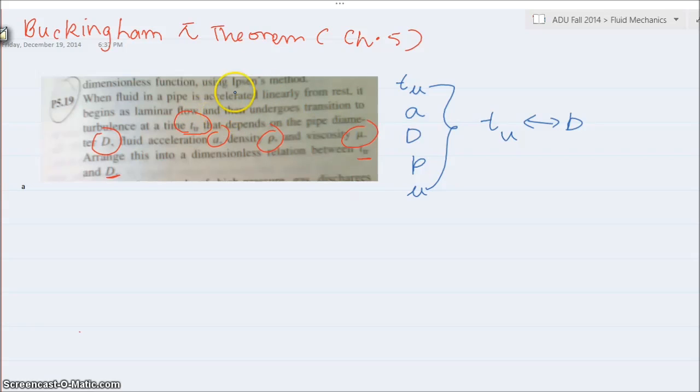Okay, so once again let me write this down. I have T_u, acceleration, diameter, rho, and mu.